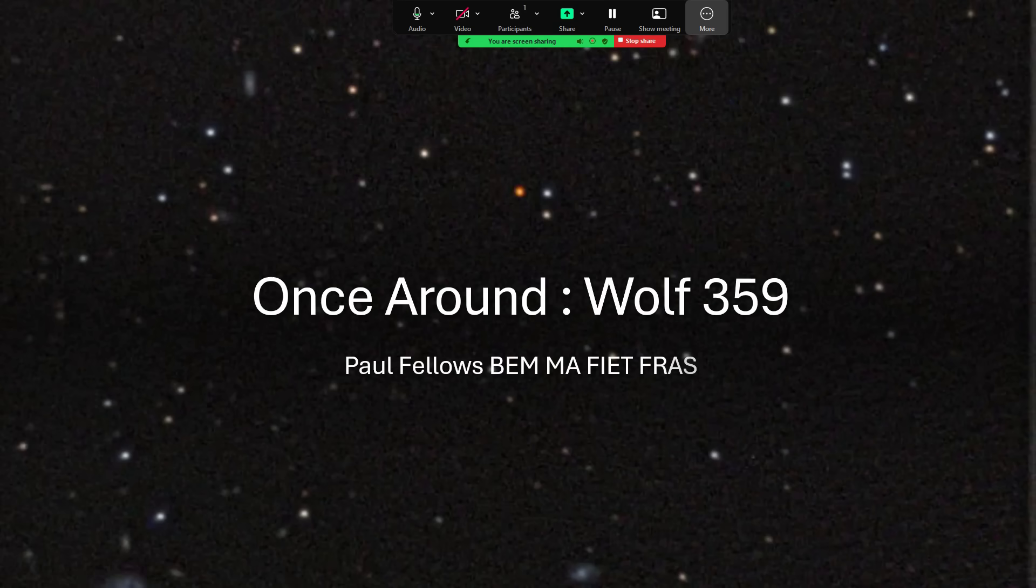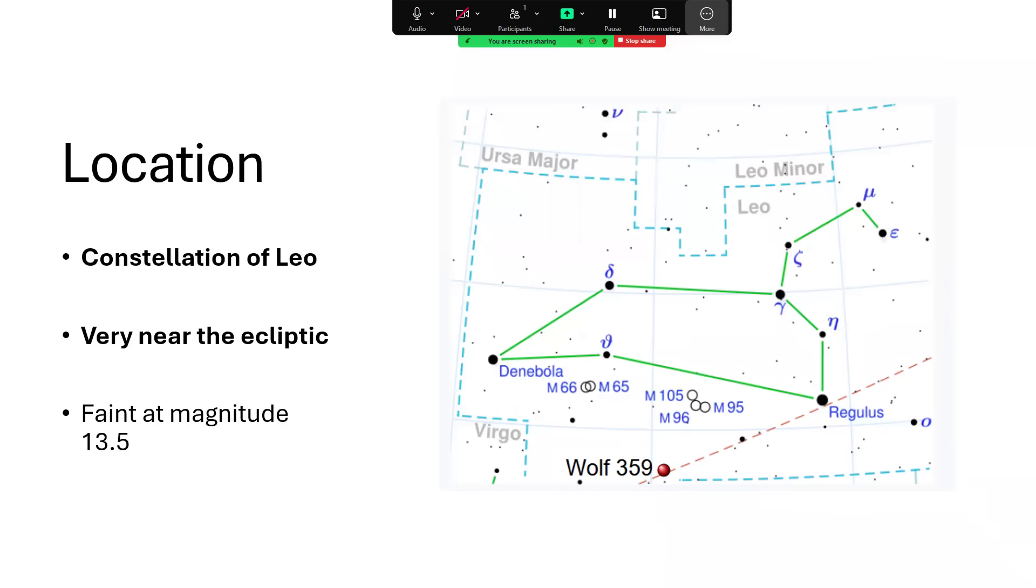Once around Wolf 359. So in the constellation of Leo, lying very close to the line of the ecliptic, where the planets and the sun tend to pass around the sky from our point of view, caused of course by really us orbiting around the sun, is a little tiny red dwarf star, very faint at magnitude 13.5. Marked on the diagram there, you can see it as the red dot just near that red line, the ecliptic, just passing by the brightest star in Leo, Regulus.